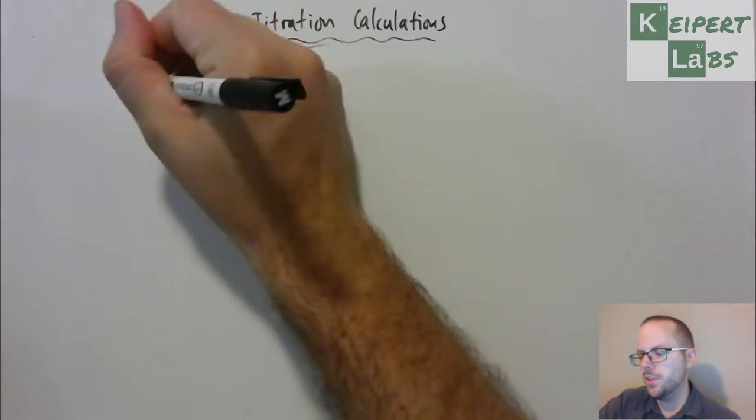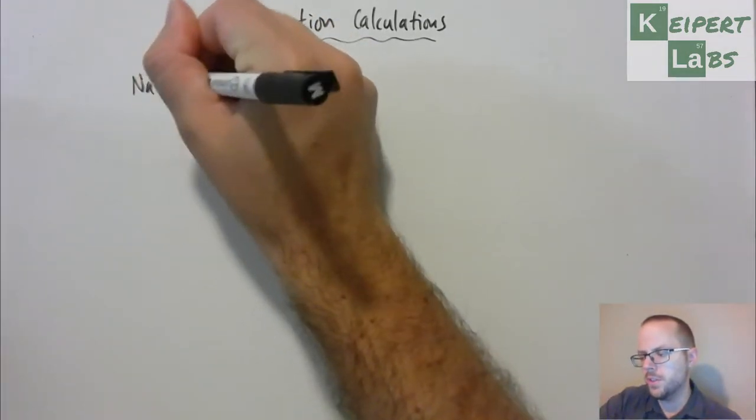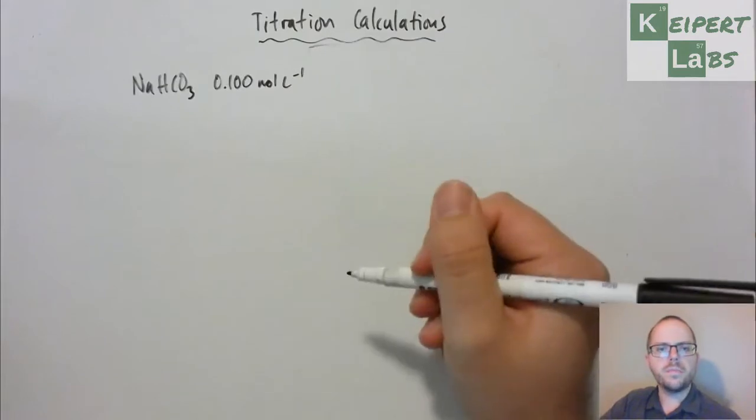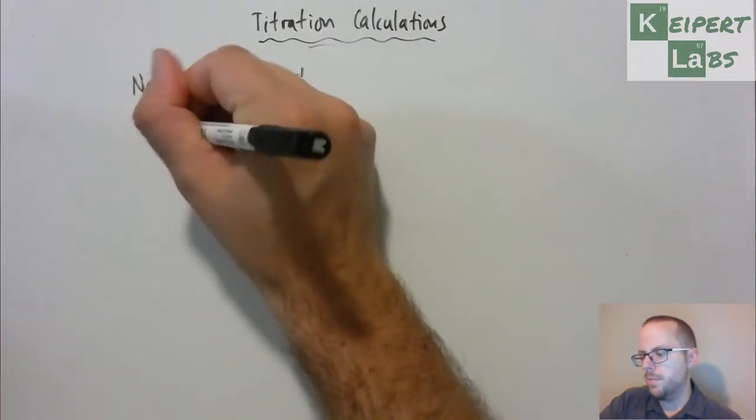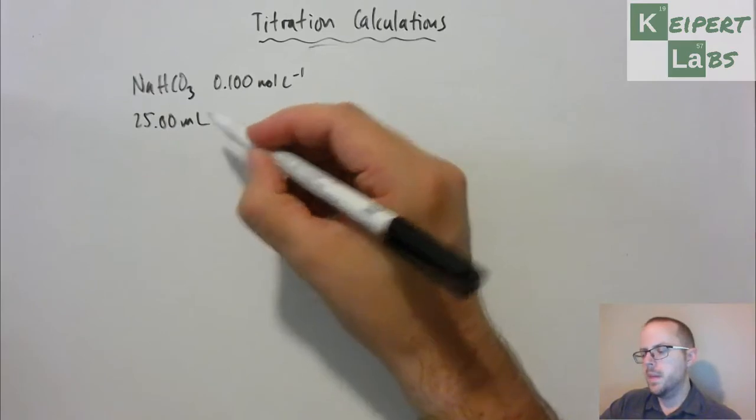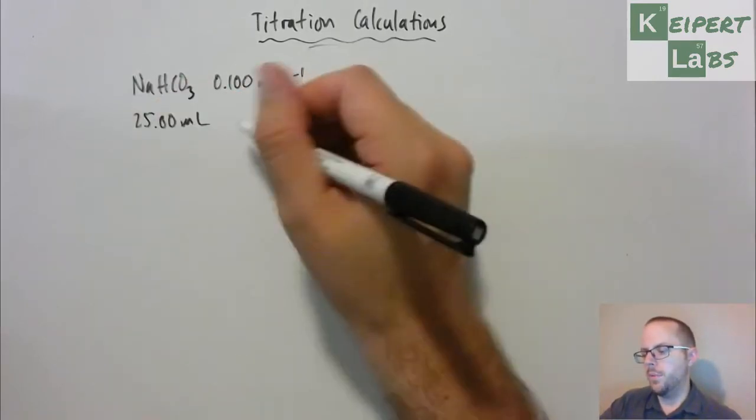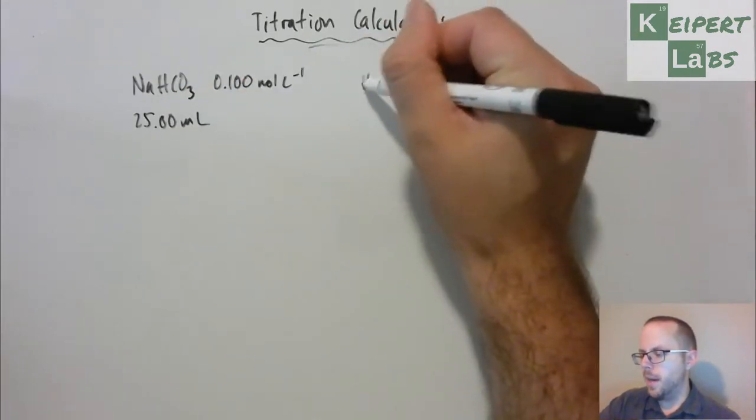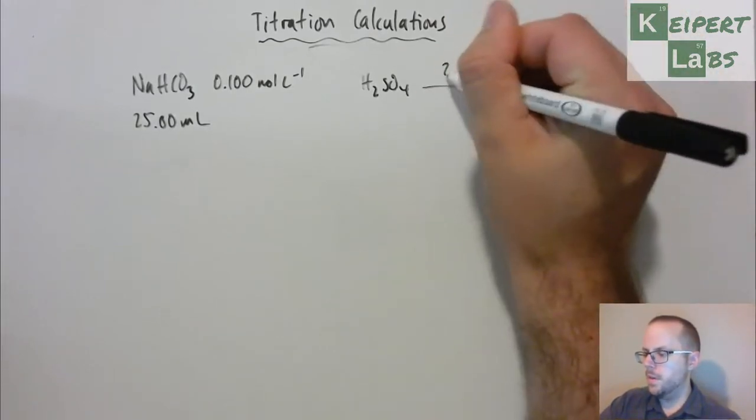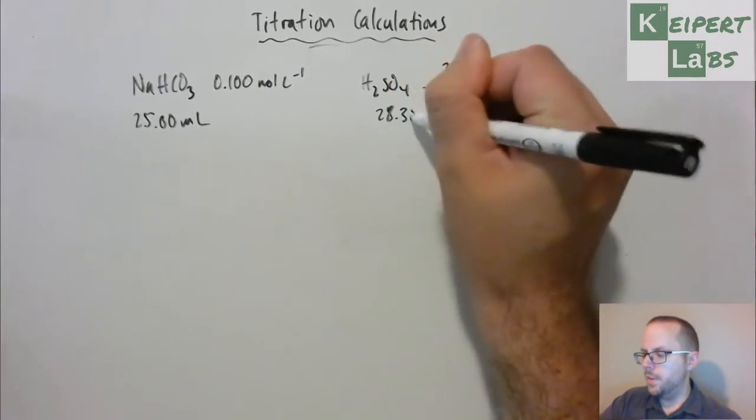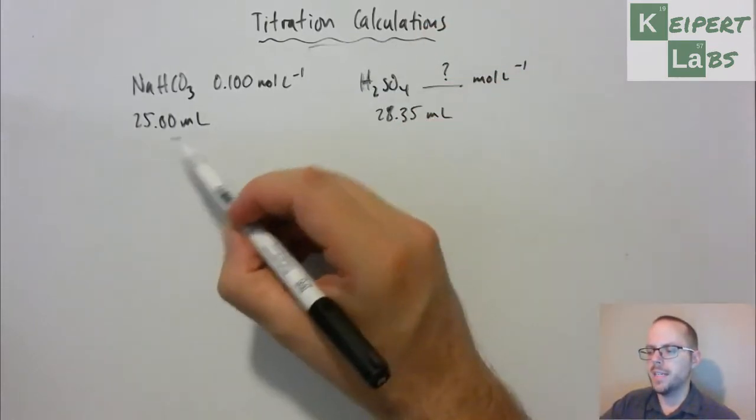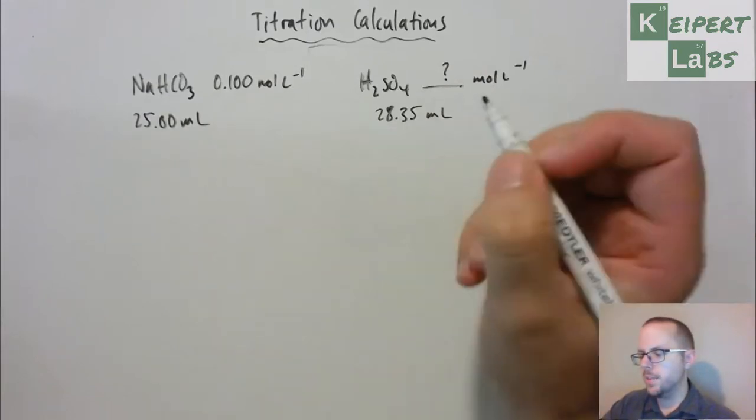In this question you're told you've got a solution of sodium hydrogen carbonate, which is sodium bicarbonate, at 0.100 moles per litre concentration. We're told that we use a 25 ml aliquot. Now, we haven't really used that word before, but aliquot, as far as amount dispensed by the pipette into the flask. So we've got 25 ml of this. And then it's being reacted with a sulfuric acid solution with an unknown concentration. Based on the titration itself, 28.35 ml of acid was needed to react exactly with our known reactant. So we're going to start off with an equation.